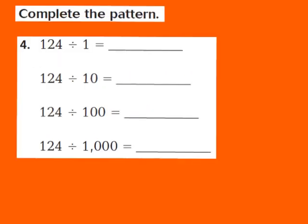Now let's take a look at question number 4 together. What I notice about my pattern is this: my divisors are 1, 10, 100, and 1,000. So this time I'm going to base my pattern on the number of zeros in my powers of 10. With the first part, 124 divided by 1 — dividing by 1 means the answer stays the same. There are no zeros after the 1, so my decimal point stays in place. So 124 divided by 1 is still 124.